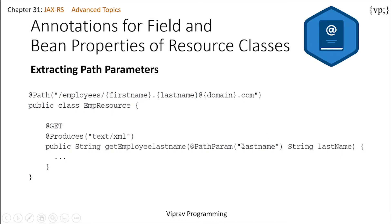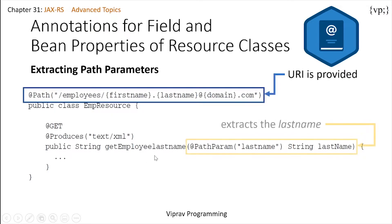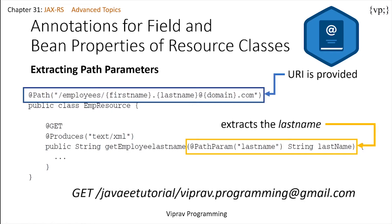It takes the last name of an employee when his or her email address is provided, and it sets that last name to get the employee's last name. This @PathParam extracts the last name parameter from the URI path template. For example, if your HTTP request is getjavaeetutorial/viprovprogramming@gmail.com, this 'programming' part will be inserted into the last name part.